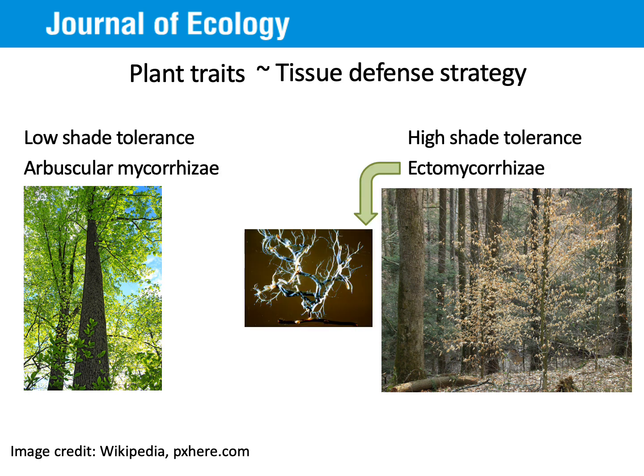Another plant trait we might use to predict susceptibility to CNDD is one that indicates which type of mutualistic fungus you typically have living on your roots. These mycorrhizal fungi are found on all trees and there are two primary types: ectomycorrhizal and arbuscular mycorrhizal. Ectomycorrhizal fungi are thought to better protect tree roots from soil pathogen infection by forming a thick barrier of fungal hyphae around the root tips.